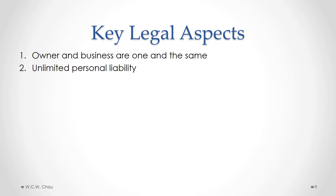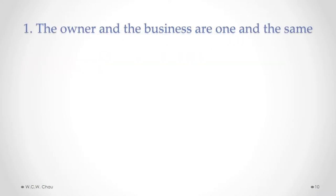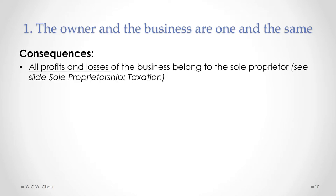The two key legal aspects of a sole proprietorship are that the owner and the business are considered to be one and the same, and that there is unlimited personal liability on the part of the owner. One consequence is that all profits and losses of the business belong to the sole proprietor, and that has a secondary consequence in terms of how a sole proprietorship is taxed, which we will discuss a little later on.